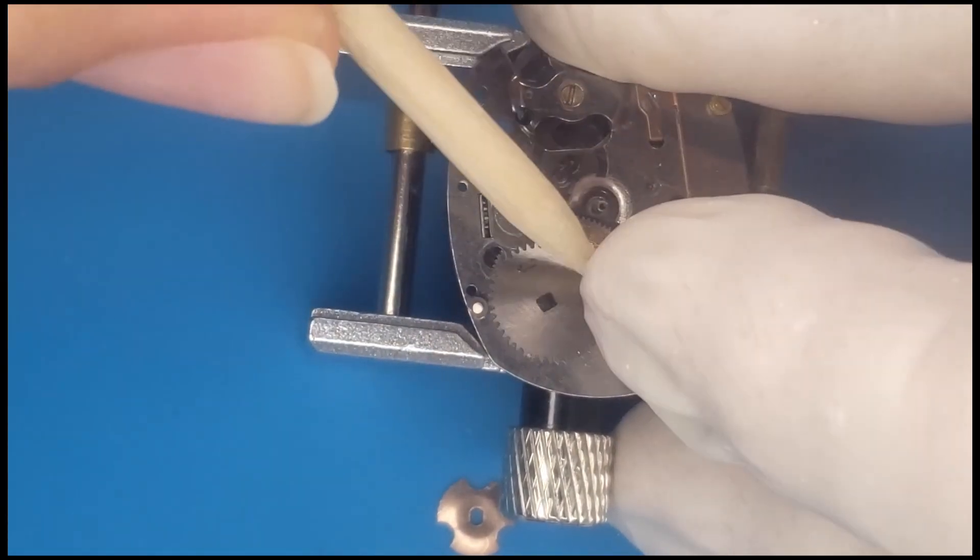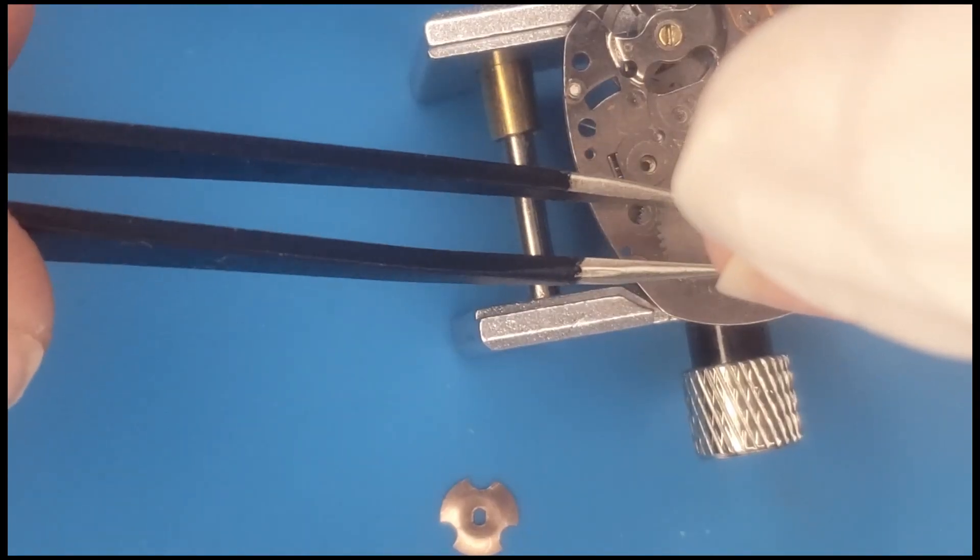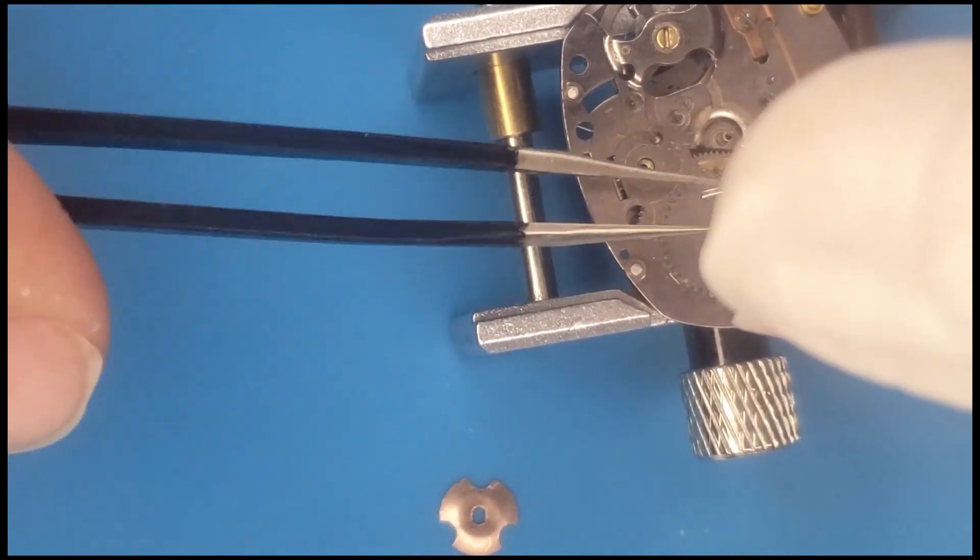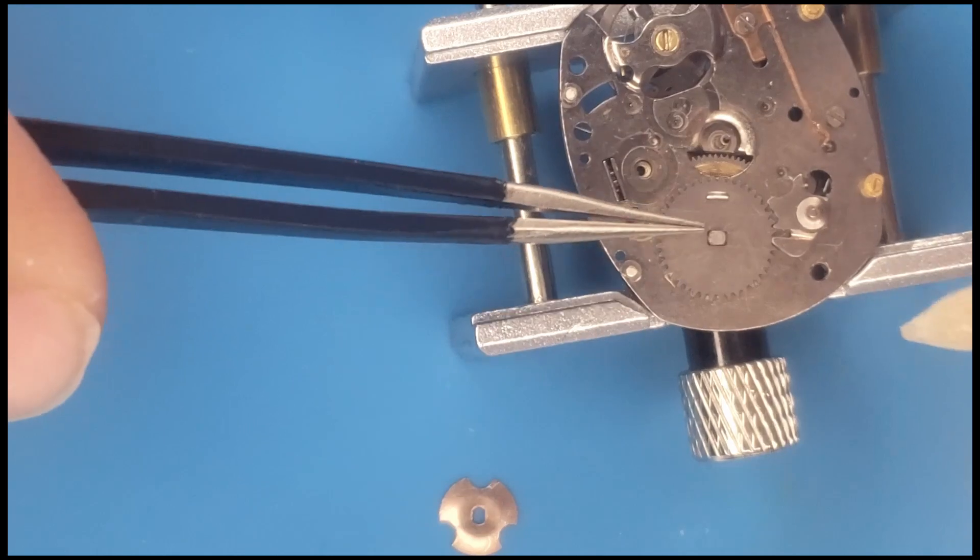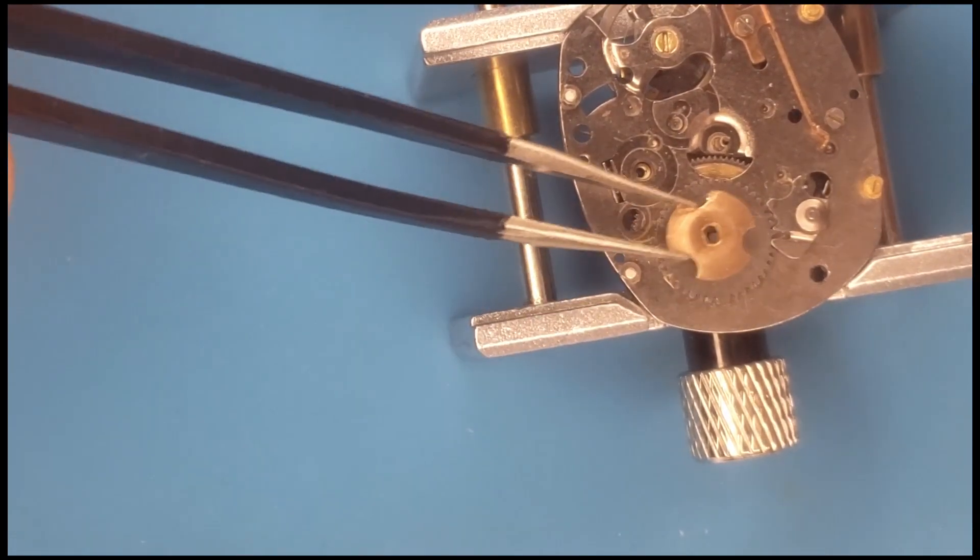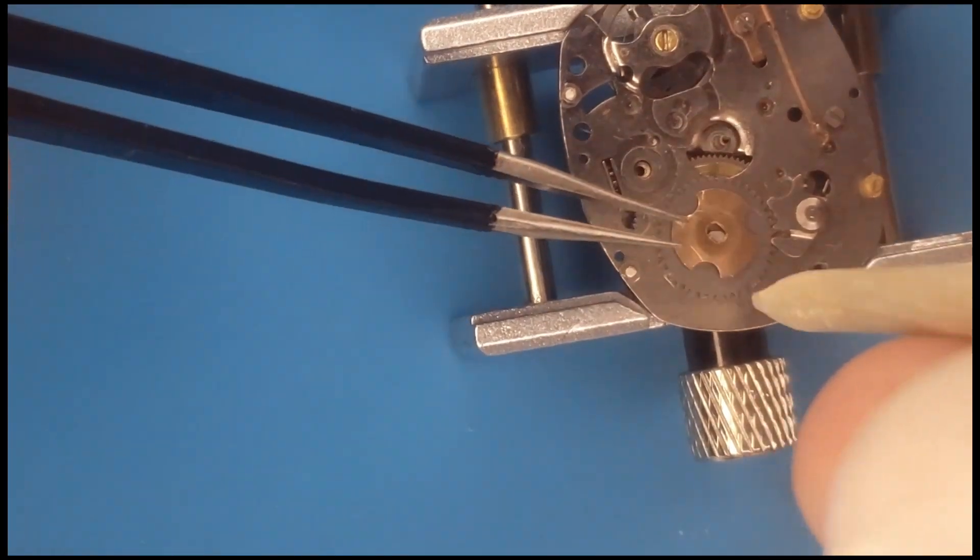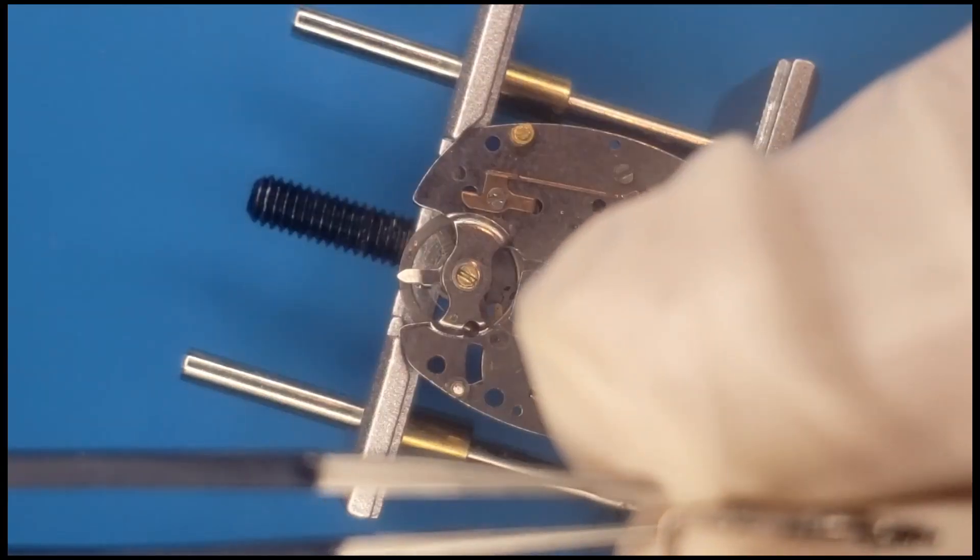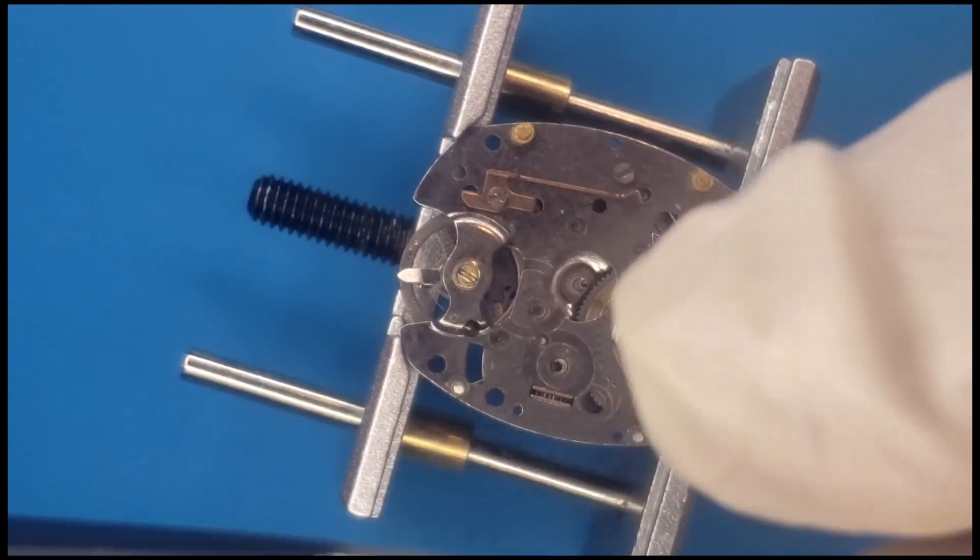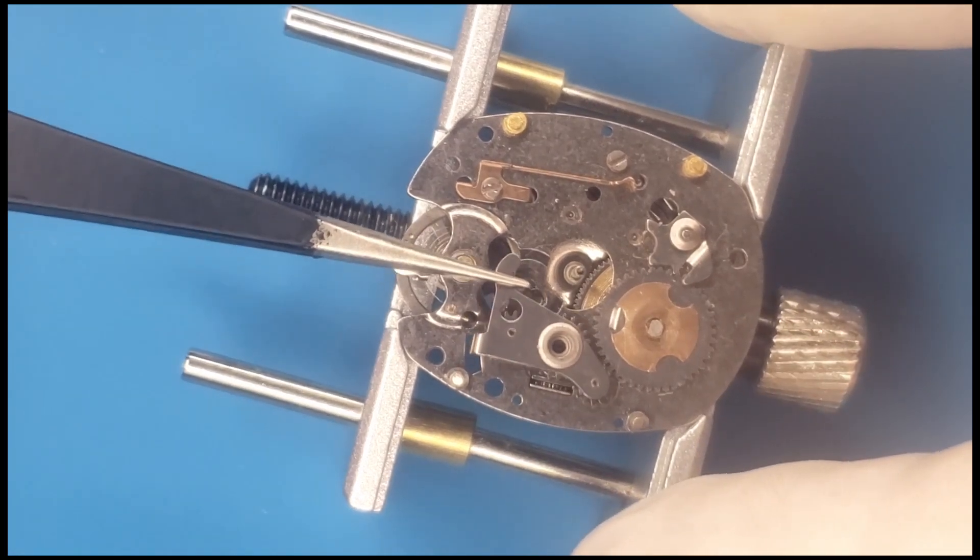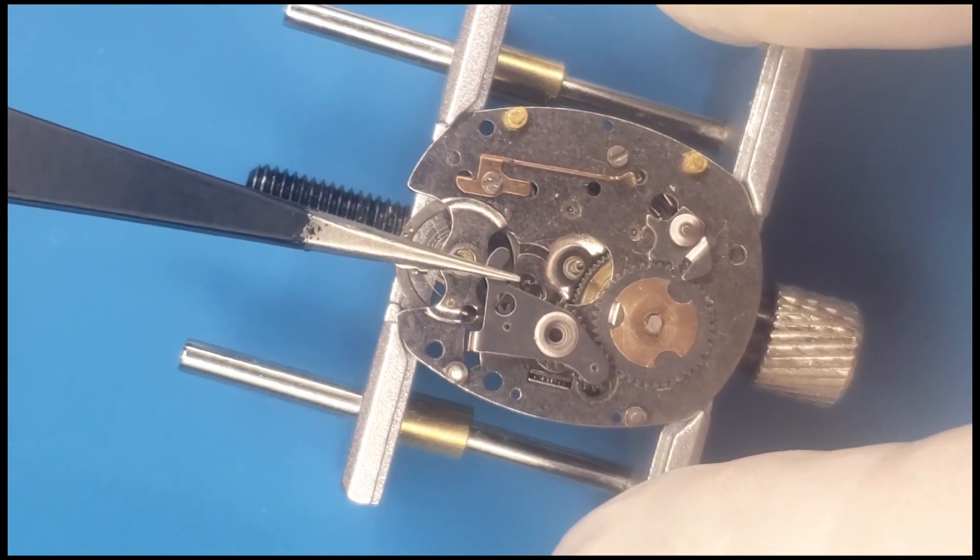Yeah, everything kind of slid into place after that, much easier. And so now that retainer ring goes in place and just spins around, snaps in easy breezy. So I greased up this bridge for the keyless works and the date setting, time setting function.